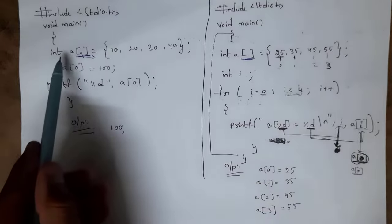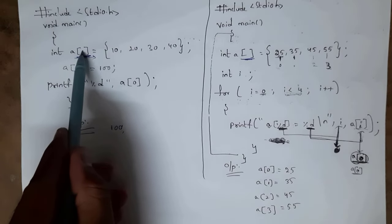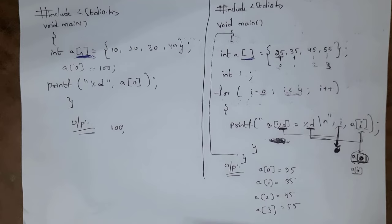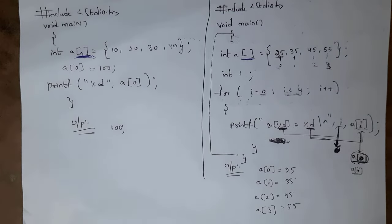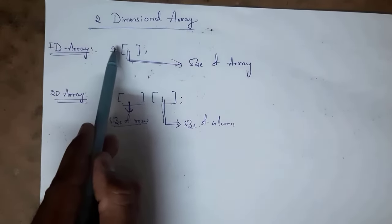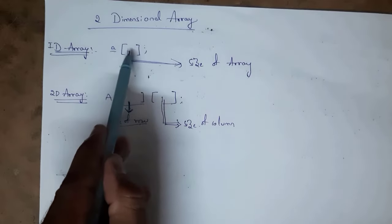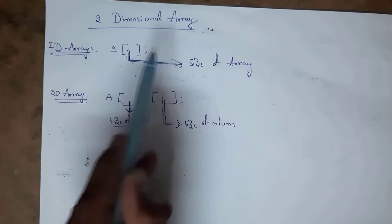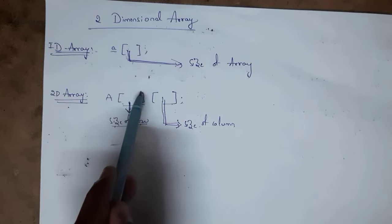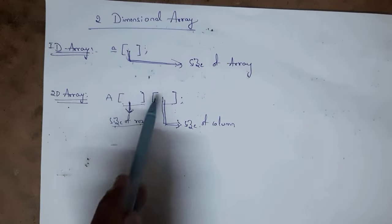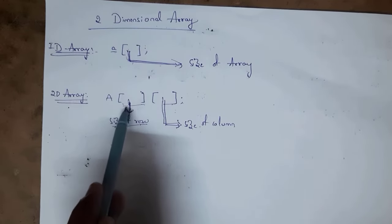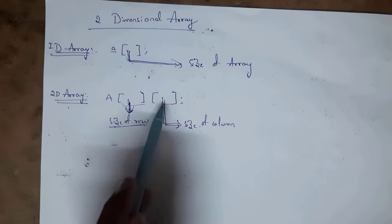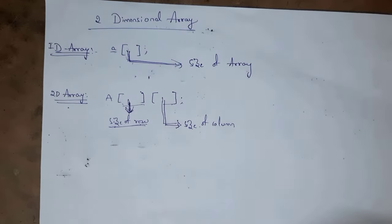Till now what we have discussed is a one-dimensional array. In a one-dimensional array, the array contains only one square bracket where we include the size. But in a two-dimensional array, the array contains two square brackets: the first represents the size of rows and the second represents the size of columns.